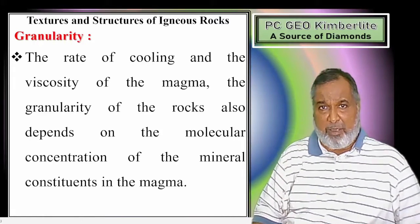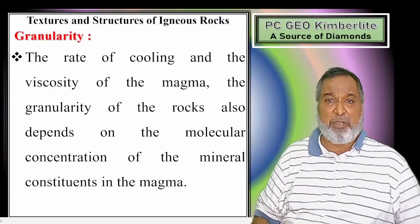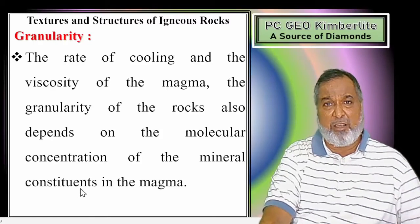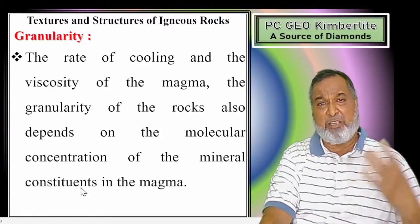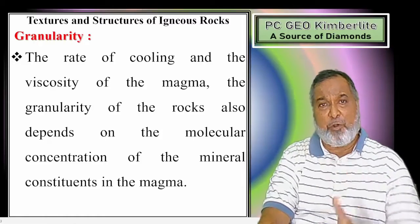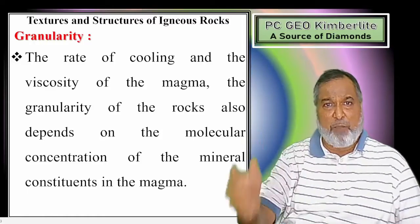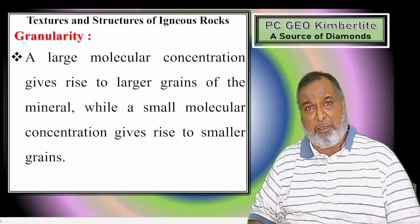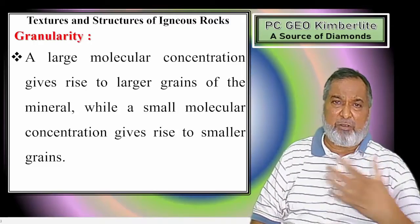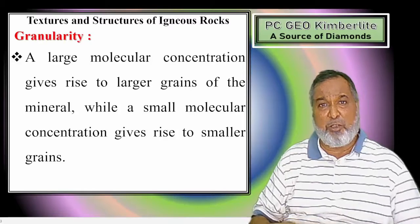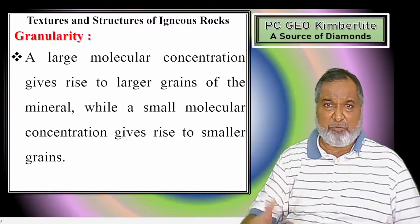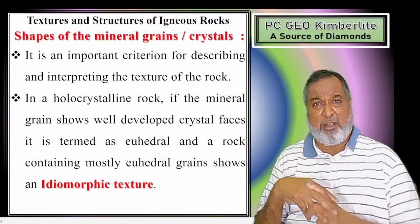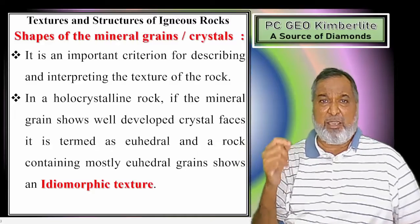The granularity of the rock can depend on molecular concentration of the minerals within the magma - what are the concentrations of SiO2, Al2O3, Fe2O3, FeO, MgO, CaO, MnO, TiO2, P2O5 - these are the nine important elements. Depending upon their concentration and what amounts are there, we are going to get larger or smaller grains.